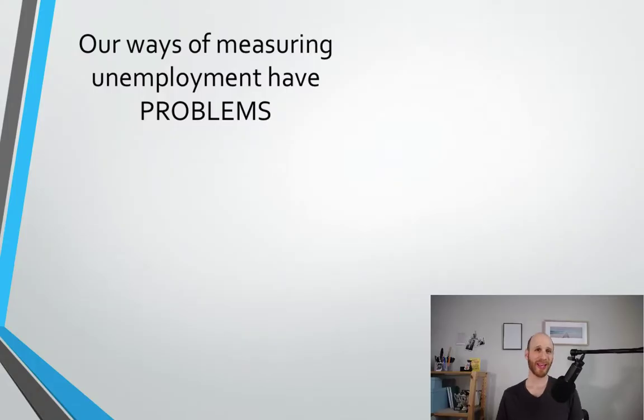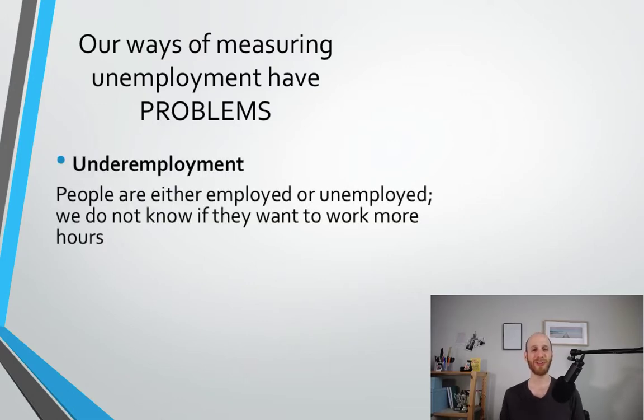The last thing in this video is that our ways of measuring unemployment have problems - they're not actually perfect. The first thing is that we have an issue of underemployment. Underemployment means that people are employed, but they wish to work more hours. When we calculate unemployment, really what we look at is people are employed or unemployed. We don't really have a good and detailed look if they are employed and would like to work more hours. And the reason this is important is because underemployment represents lost output. These people could be working more hours and contributing more to the economy, but we don't have that way of tracking them.